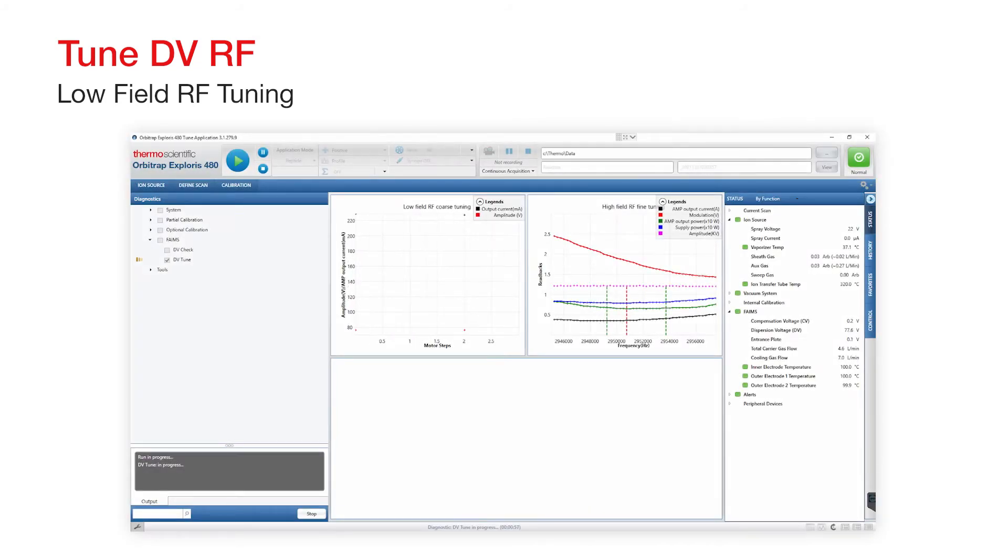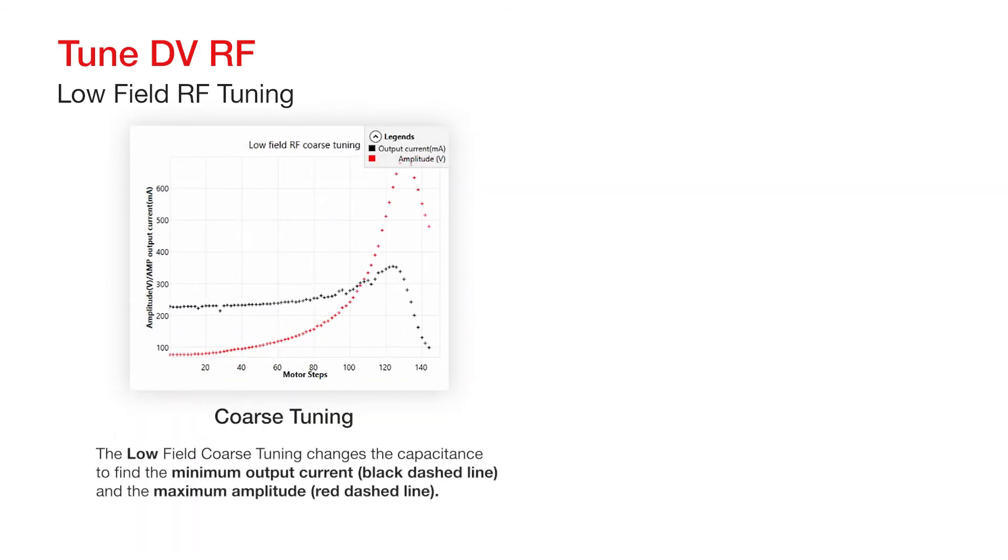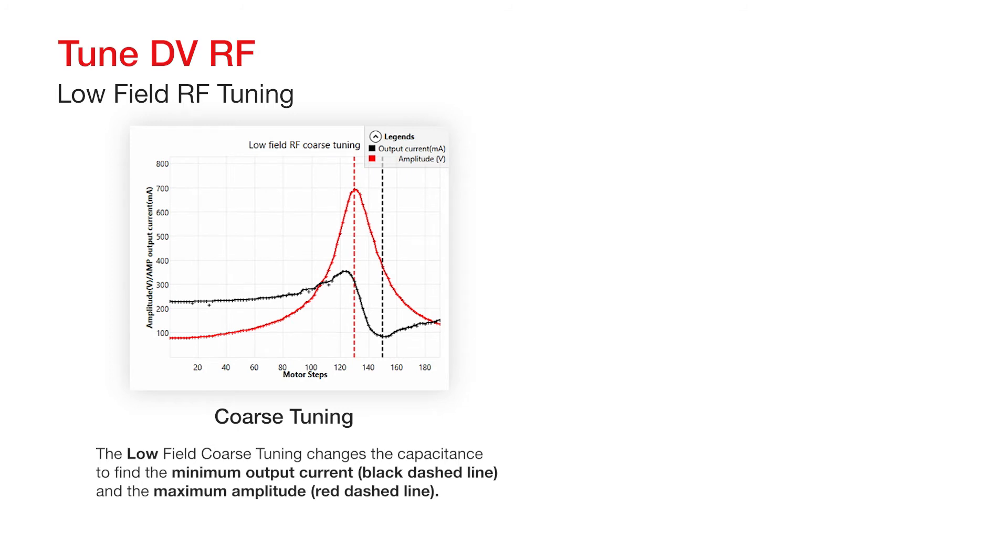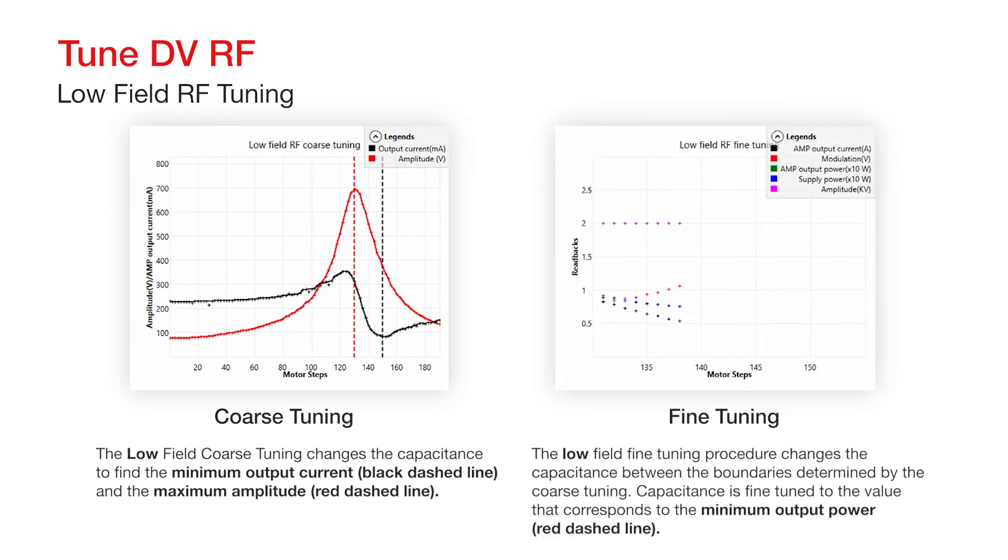Because of the nature of the asymmetric waveform FAIMS uses, the low-field frequency must be half of the high-field frequency. The high-field frequency varies for each system, so it's not possible to use a set value for the low-frequency transformer. The low-frequency is therefore adjusted by using a stepper motor to change the capacitance, which is used to bring the resonance of the low-frequency transformer to exactly half of the high-frequency for that particular system. The low-field coarse tuning changes the capacitance to find the minimum output current, shown here as the black dashed line, and the maximum amplitude, shown as the red dashed line. The low-field fine-tuning procedure changes the capacitance between the boundaries determined by the coarse tuning. Capacitance is fine-tuned to the value that corresponds to the minimum output power, shown as the red dashed line.